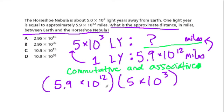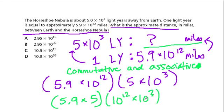So I'm going to regroup and rearrange so that I have 5.9 times 5. I'm going to make that one group. And that times 10¹² times 10³. I'm going to regroup that. 10¹² times 10³ is what?